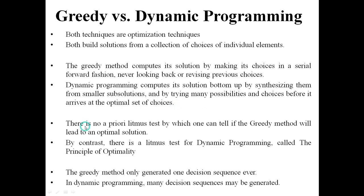There is no priori litmus test by which one can tell if the greedy method will lead to an optimal solution. By contrast, there is a litmus test for dynamic programming called the principle of optimality. The greedy method only generates one decision sequence ever, but dynamic programming may generate more than one decision sequence.